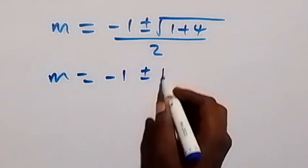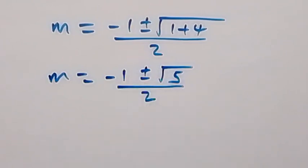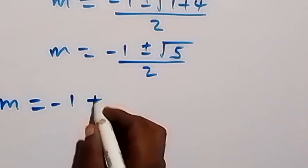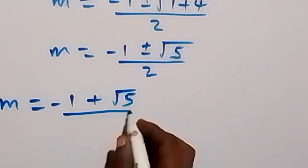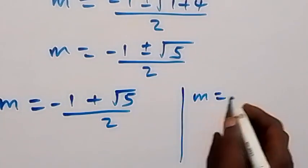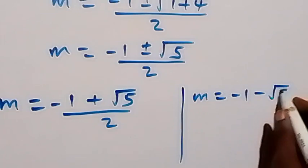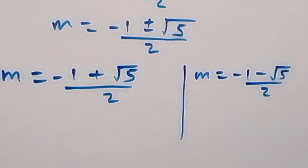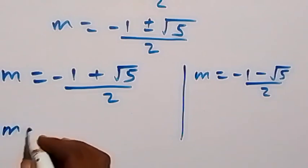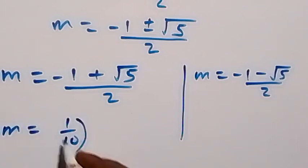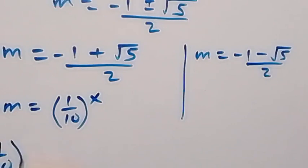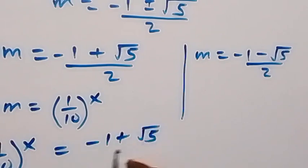From here, m equals to minus 1 plus or minus root 5 over 2. We have two possible values of m. First, m equals to minus 1 plus root 5 over 2, and also m equals to minus 1 minus root 5 over 2. Recall that m was represented as 1 over 10 raised to power x, so this implies 1 over 10 raised to power x equals to minus 1 plus root 5 over 2.